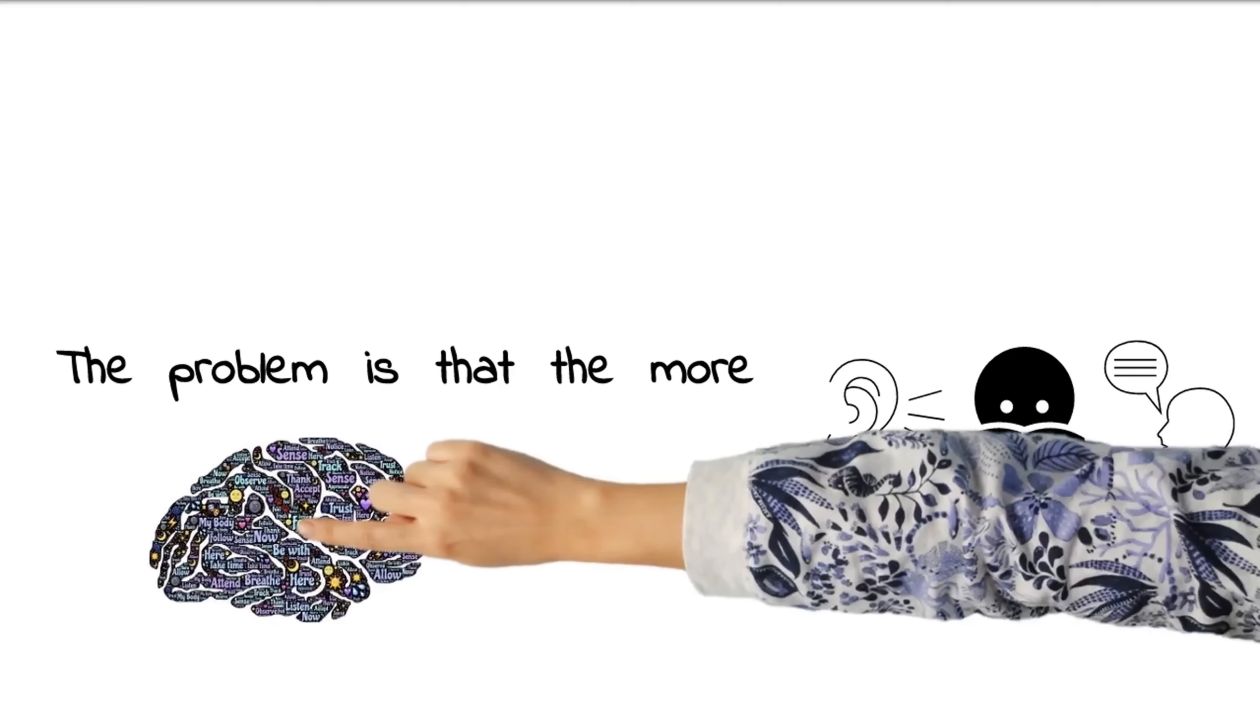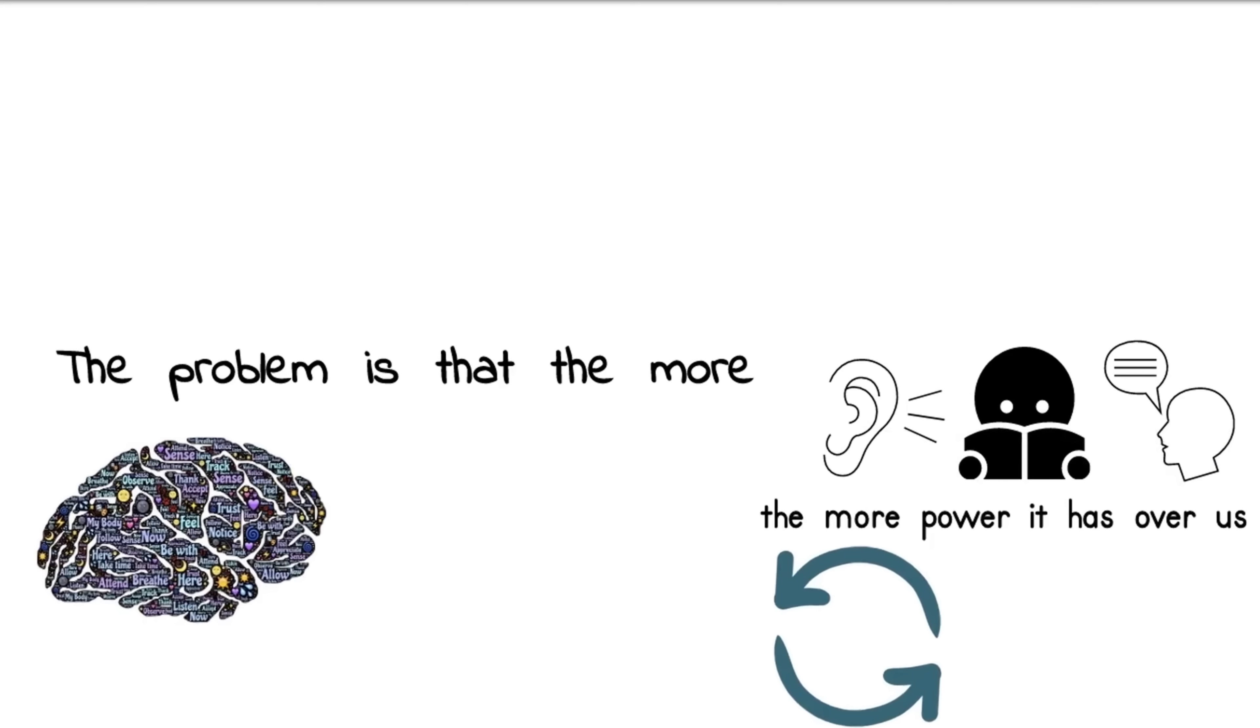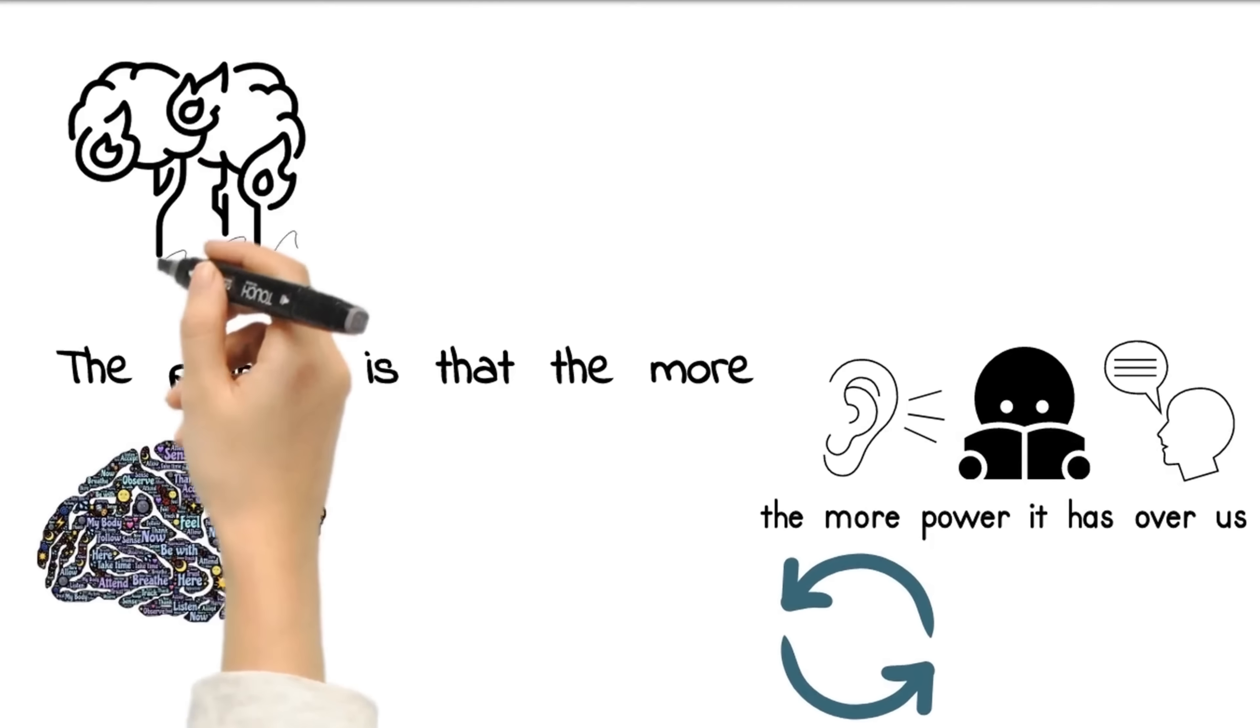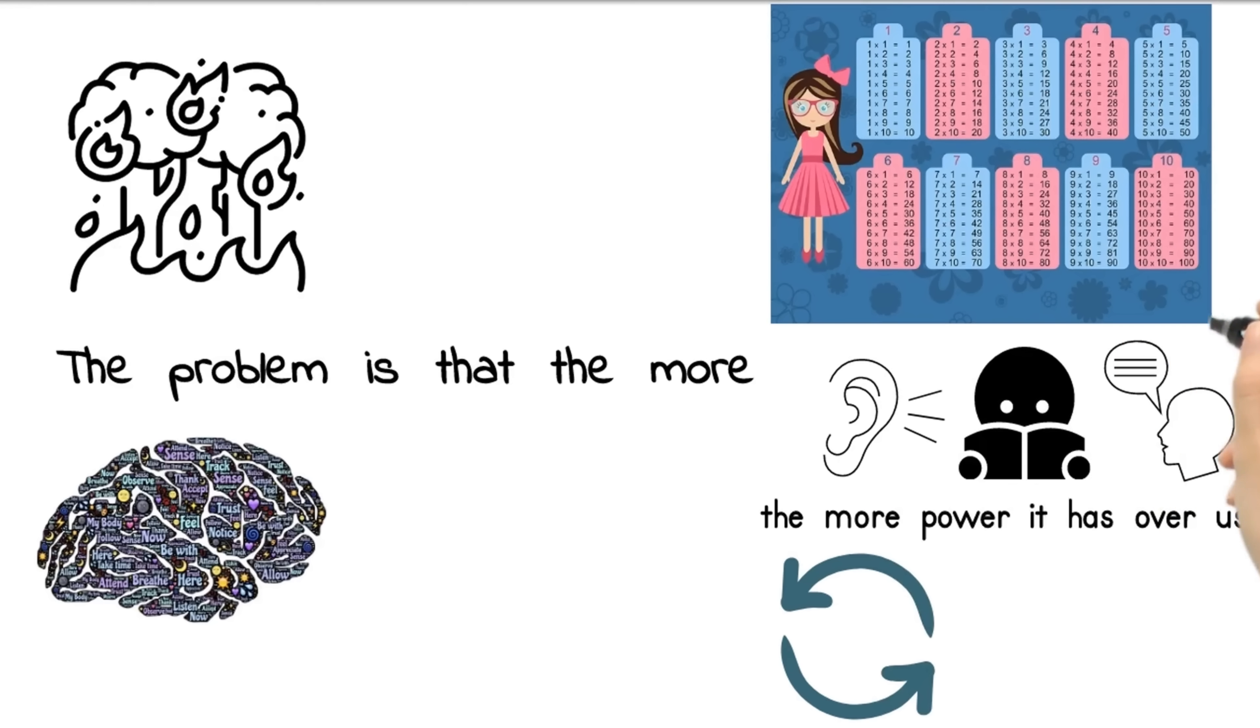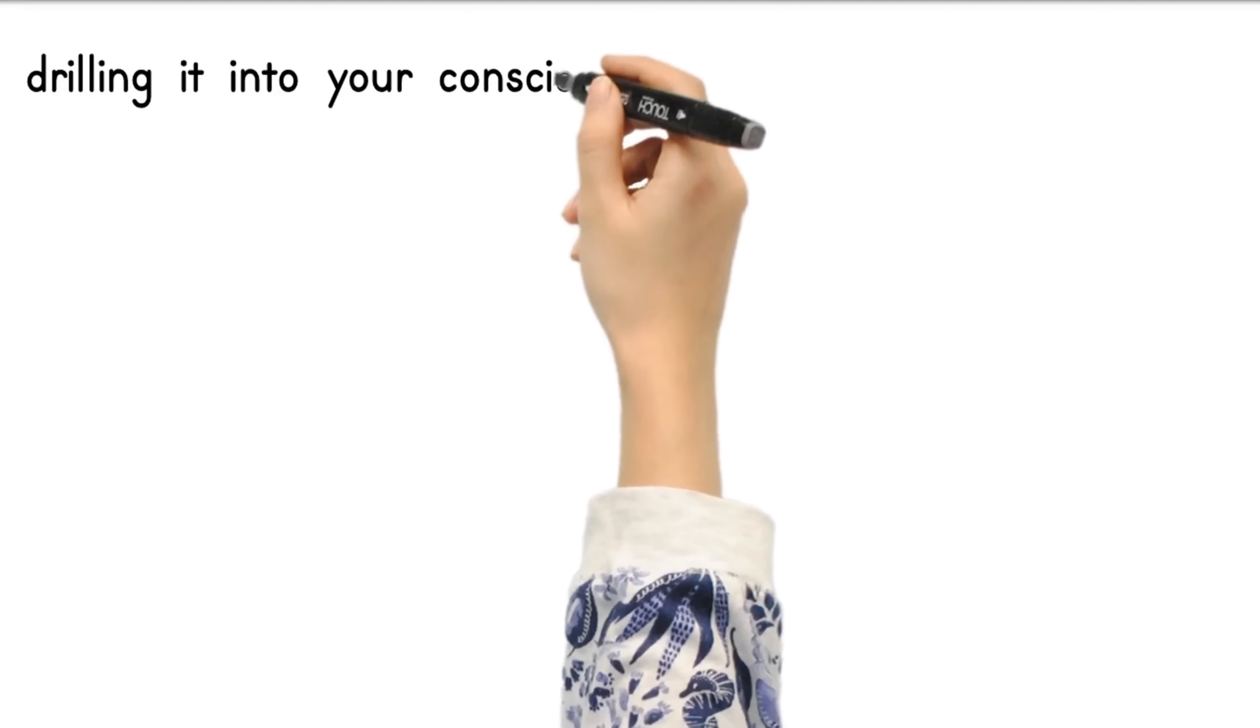This is because the brain uses repetition to learn, searching for patterns and consistency as a way to make sense of the world around us. Only after being burned a few times can we understand that fire is always hot. You may not remember the exact end date of the civil war, but odds are you still know what 8 by 9 is because you had to repeat your multiplication tables over and over again, drilling it into your consciousness.